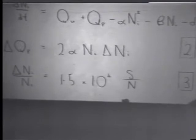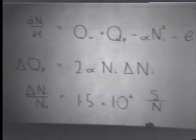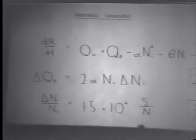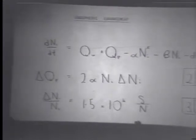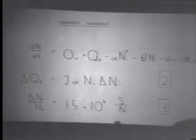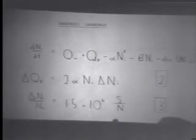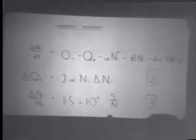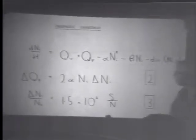I now wish to consider the electron precipitation into the ionosphere. This enhanced electron precipitation causes ionospheric enhancement in the lower E region in general.